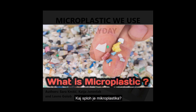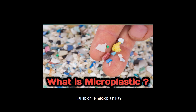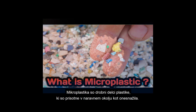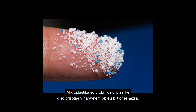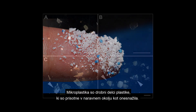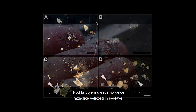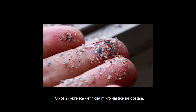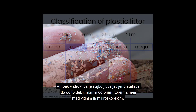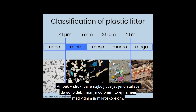Microplastic in toothpaste. So first, what even is microplastic? Microplastics are tiny plastic particles that pollute the environment. In this concept, we include particles of different shapes and structures. A general definition of microplastic doesn't exist, but it has been accepted that microplastics are particles smaller than five millimeters, so on the border between visible and microscopical.